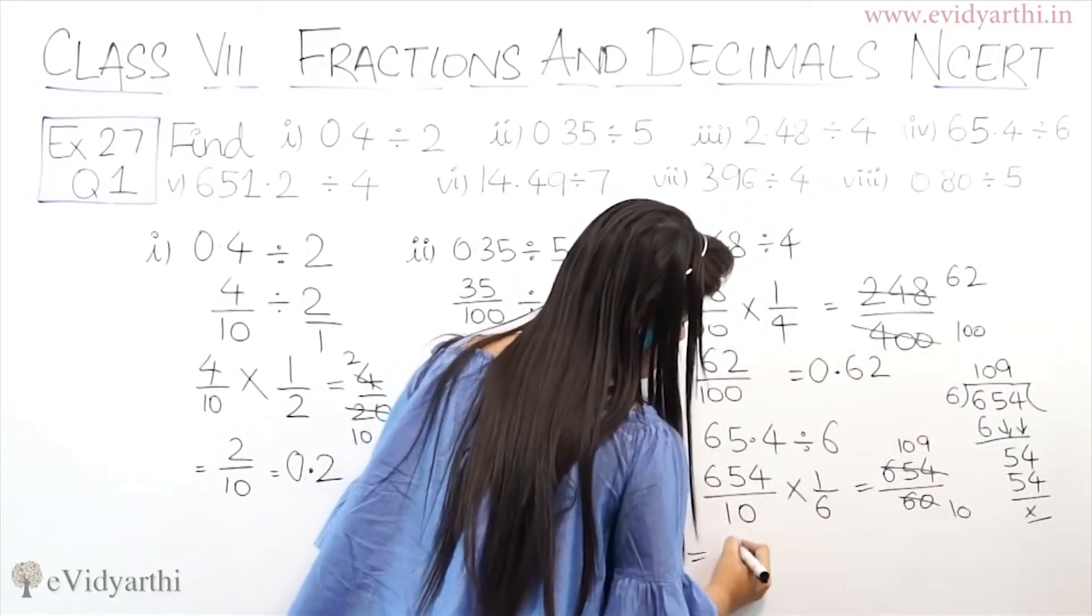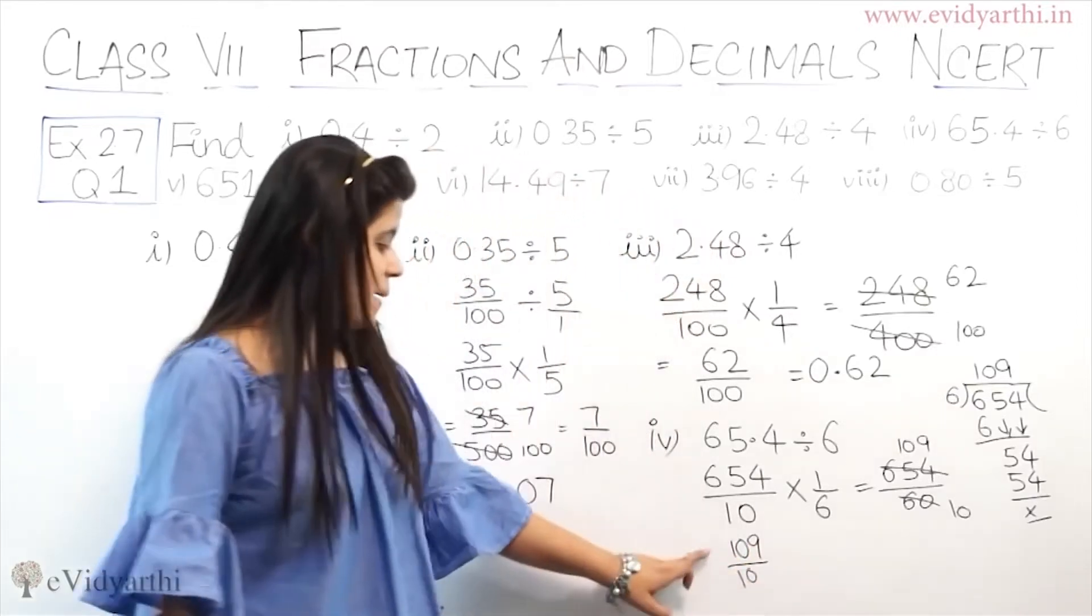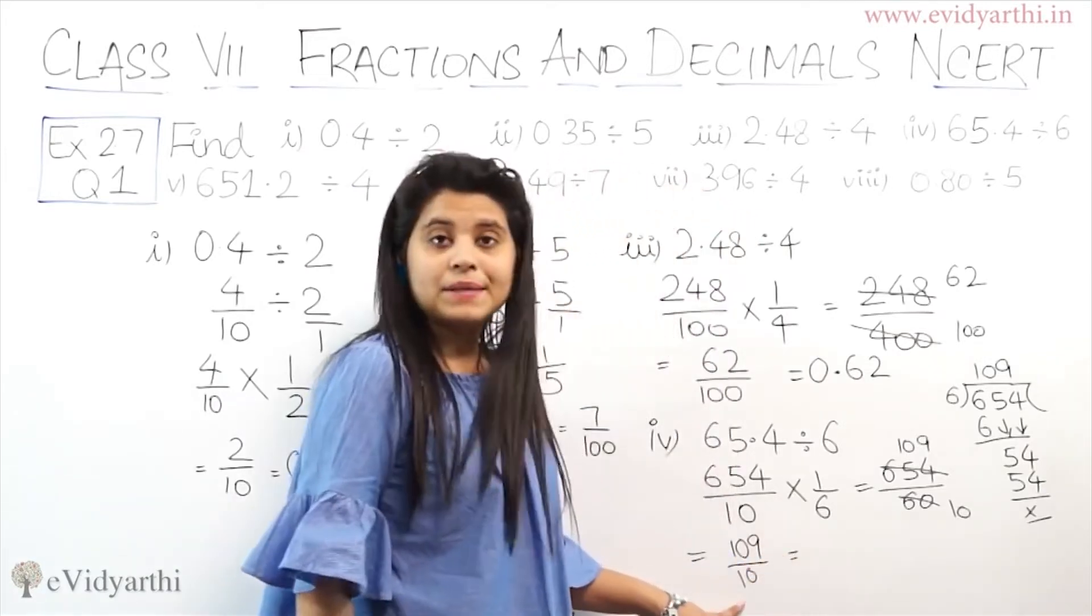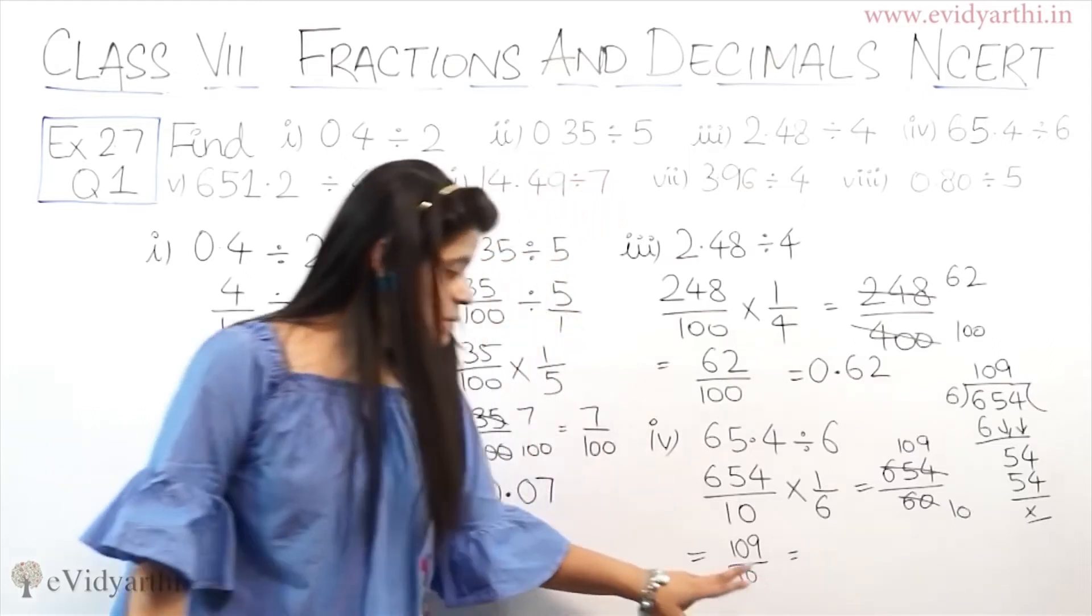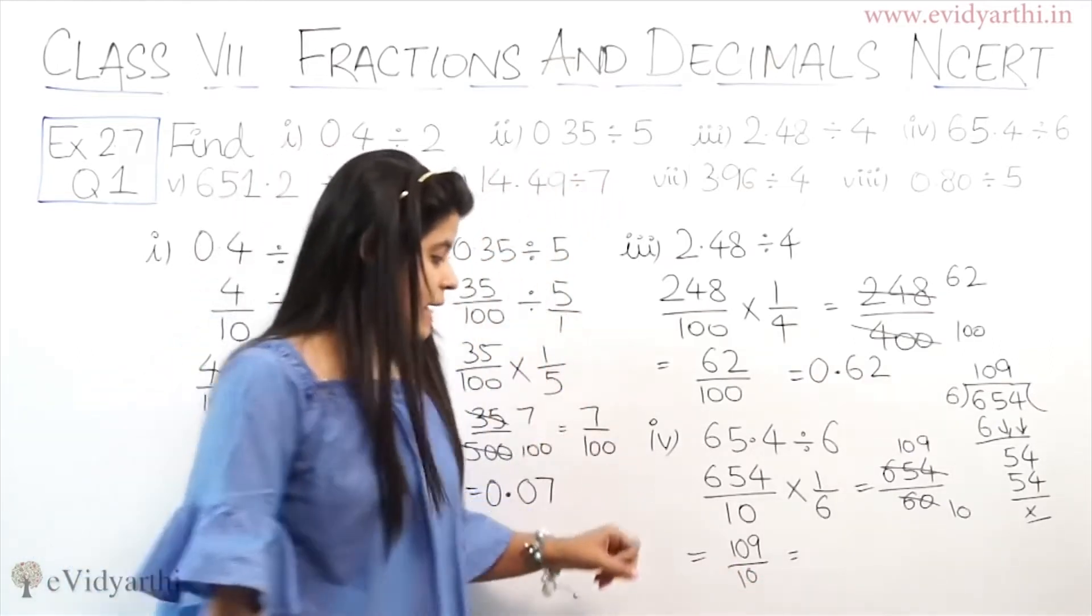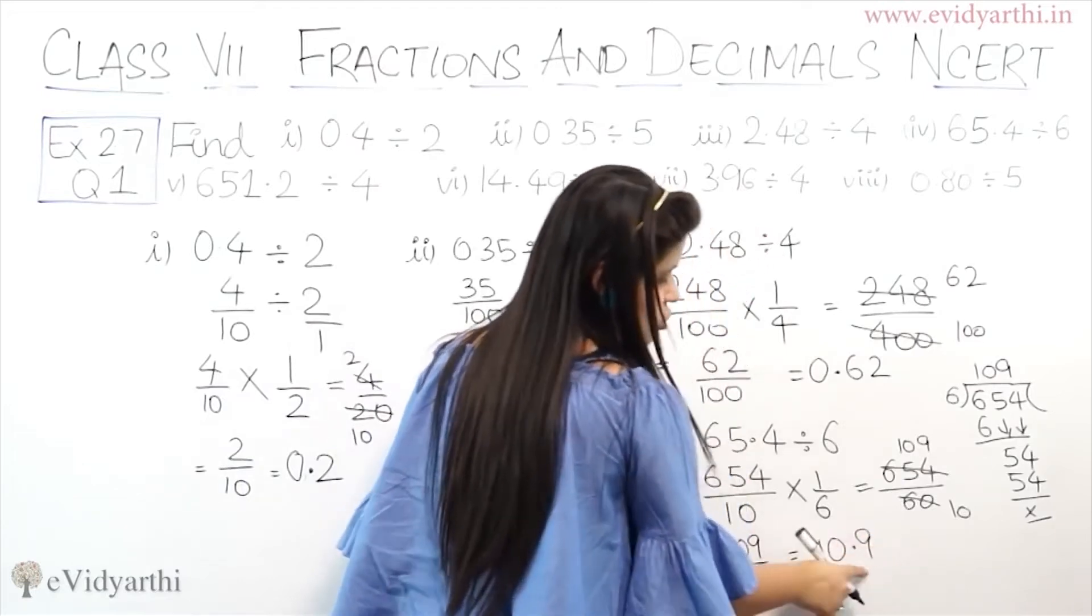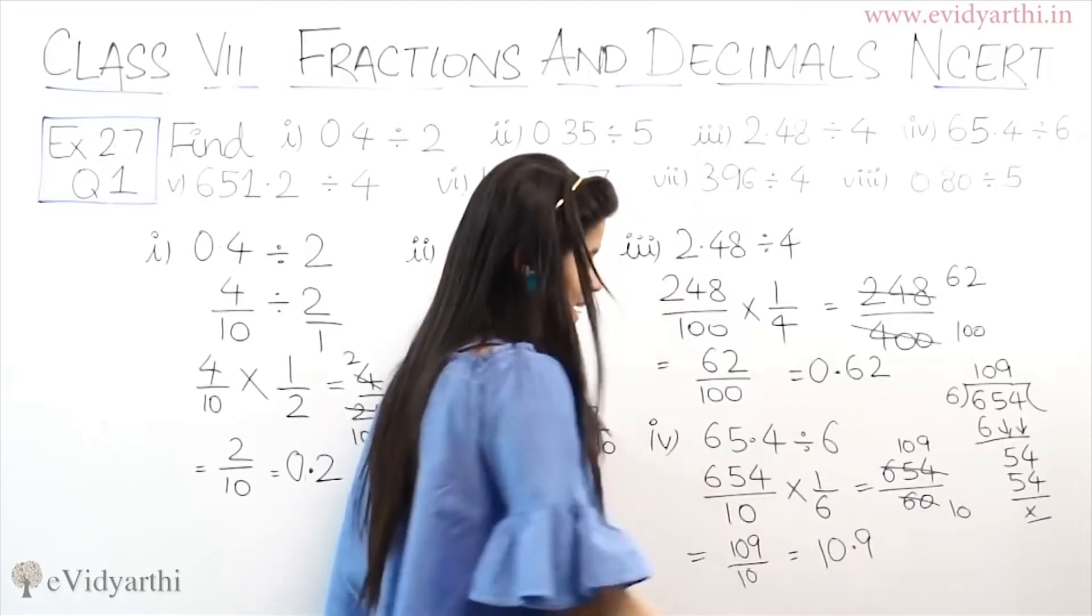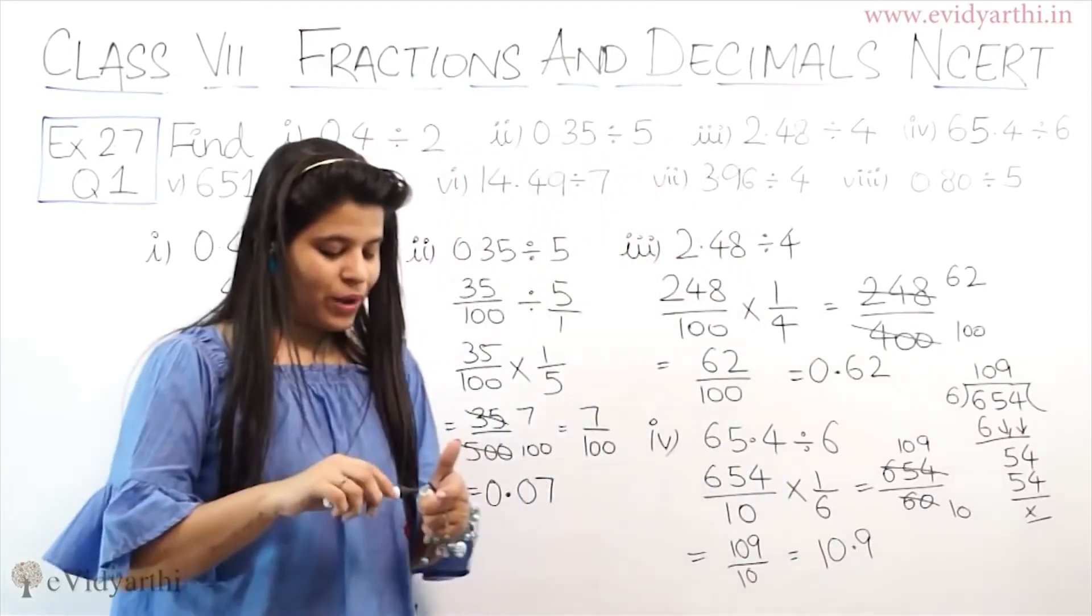So equals to 109 upon 10. So here we have 109 upon 10. So if I have zero here, then I can put it in decimal. So decimal is 1 digit. So decimal is 1 digit. So I put decimal before 9. So this is 10.9. The answer is 10.9.